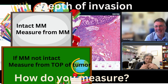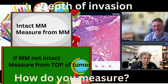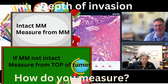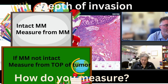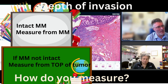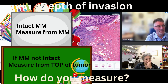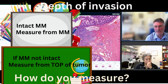So my understanding is that if the muscularis mucosa is intact, you measure it from the muscularis mucosa. And if you do not see an intact muscularis mucosa, you measure it from the very top of the epithelium. Would that be correct? Yes, I think that's fair. You have to make sure that you're looking at what you believe to be the most appropriate level. So doing levels will be helpful. And you also have to be as confident as you can be that your section is taken perpendicular to the surface of the lesion.